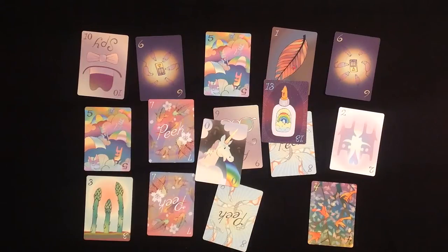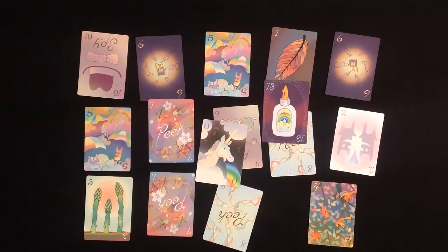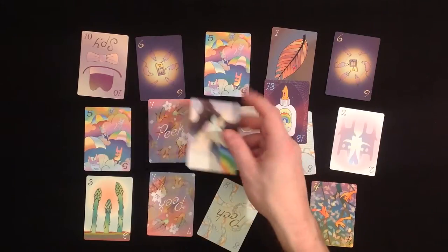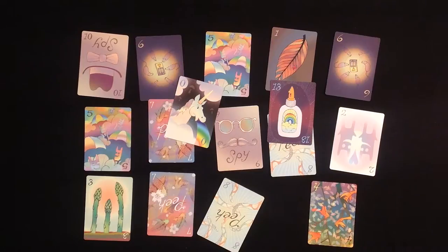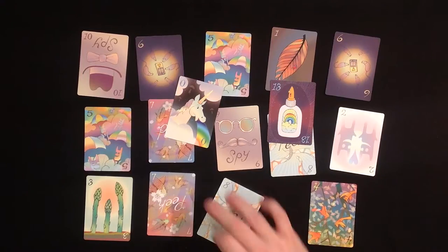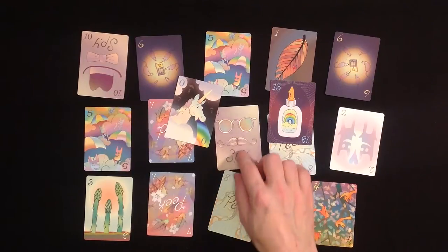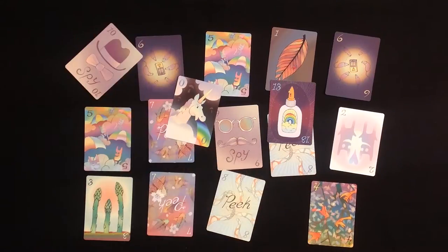Each number is there four times, except for the zero and the thirteen, which are two times each in the deck. So, two zeros, two thirteens, and four times each of two to twelve. That's all you need to know. And we'll talk about these special abilities later.